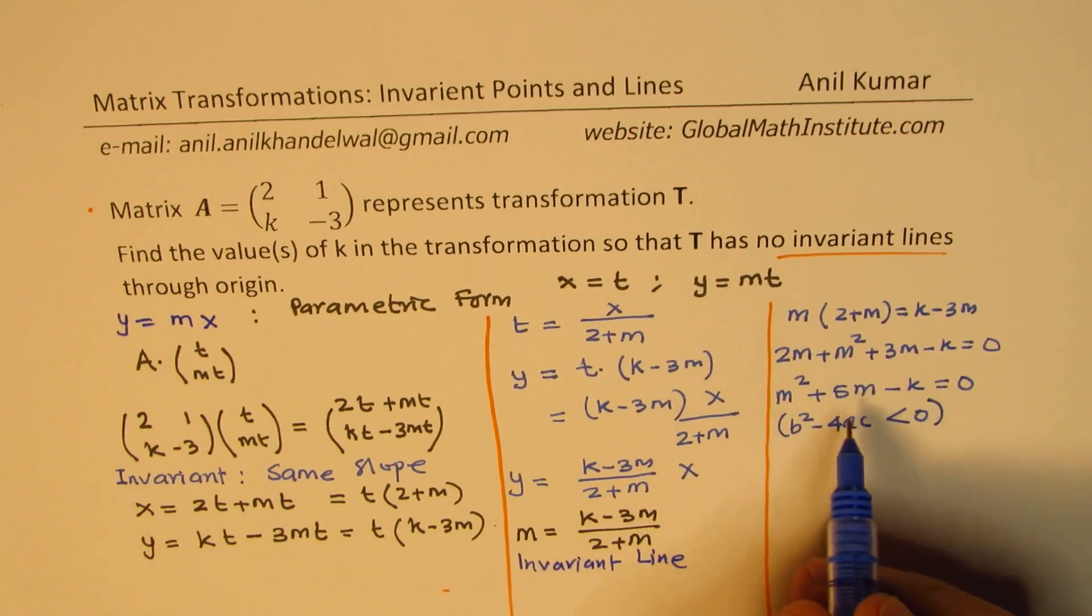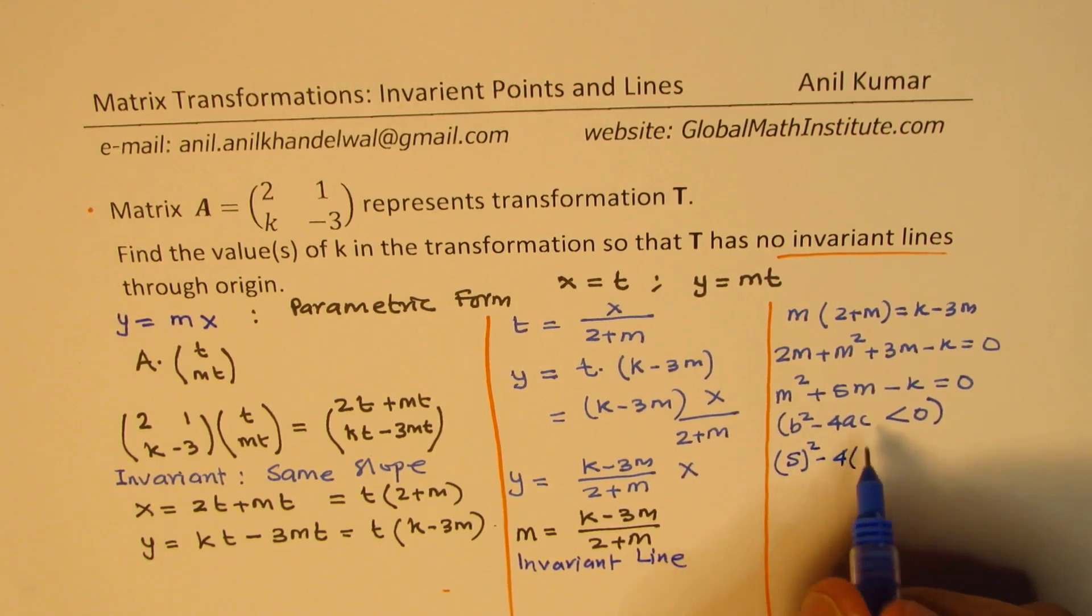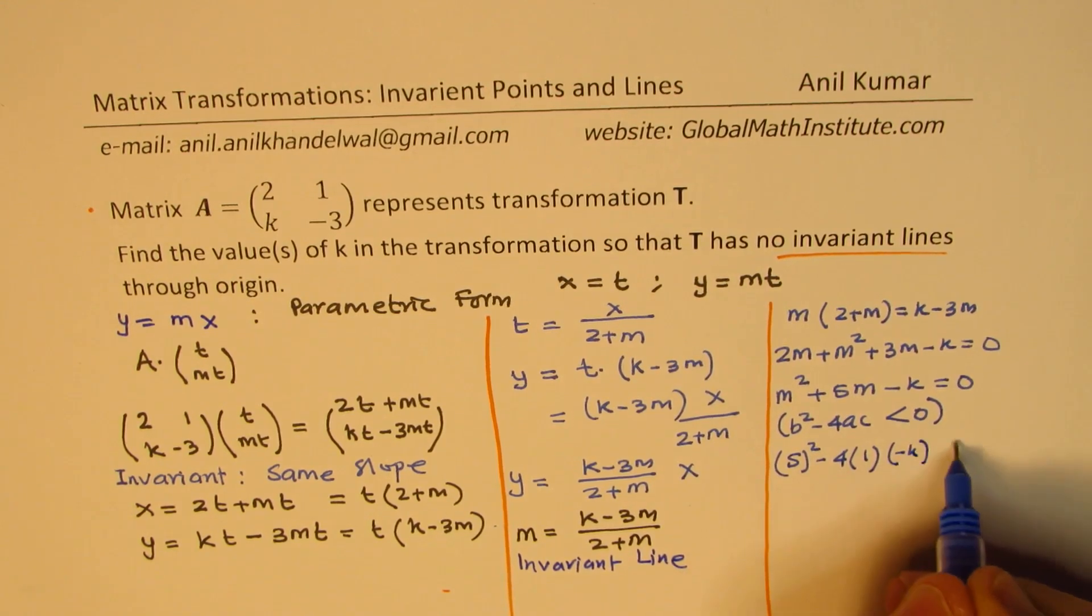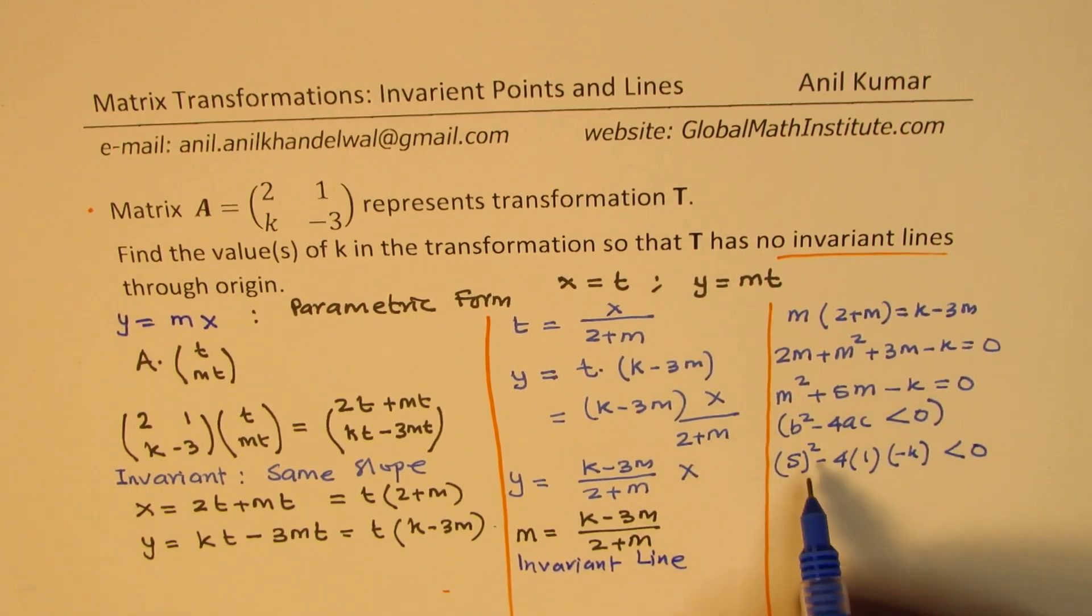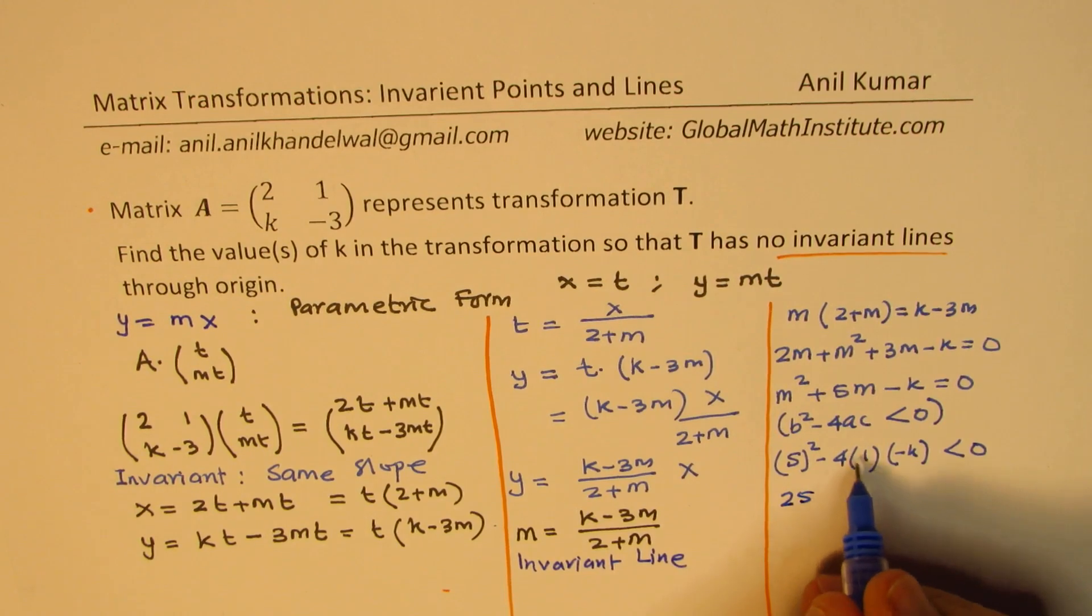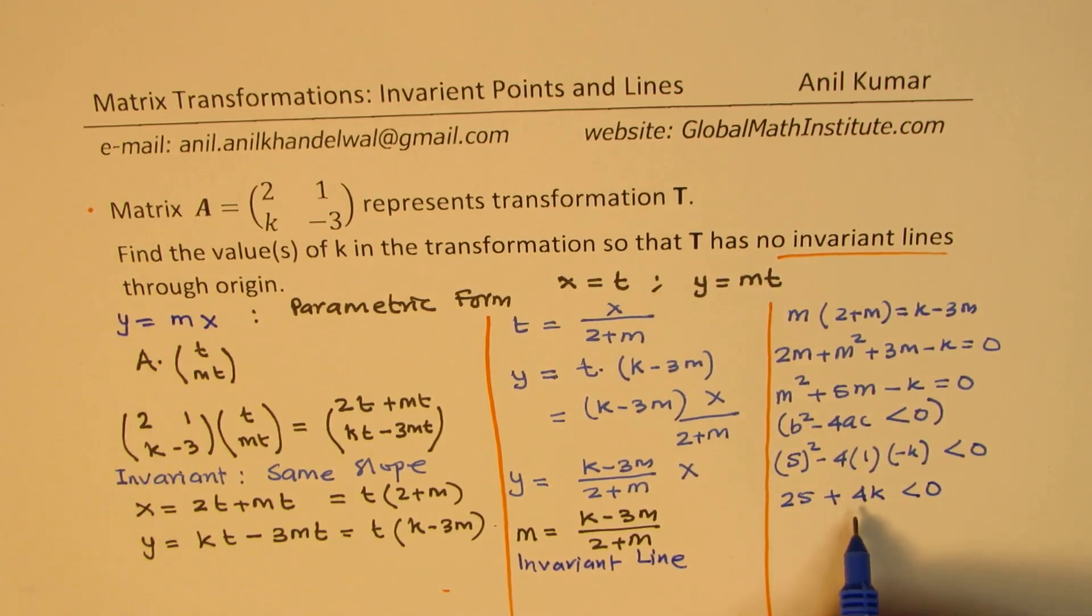So this b square is 5 here, so 5 square minus 4 times a is 1 and c is minus k. That should be less than 0. Now, so 5 square is 25 and that is plus 4k less than 0. So that means taking 4k, 25 to this side, we can write 4k is less than minus 25. We'll take 25 on this side.